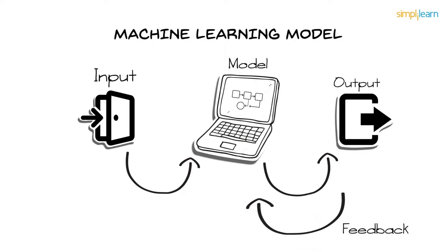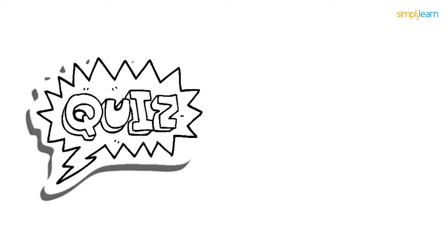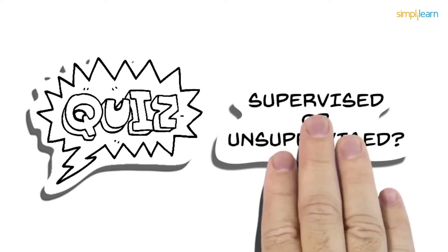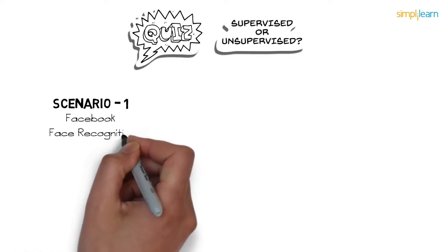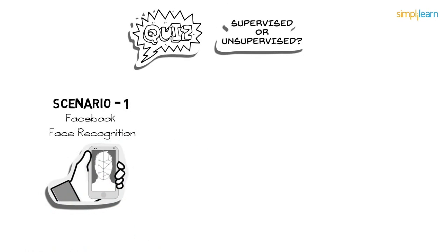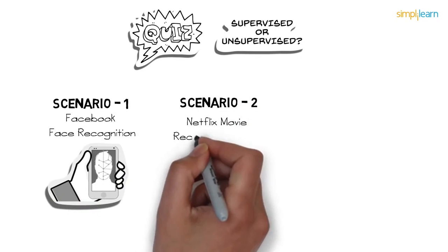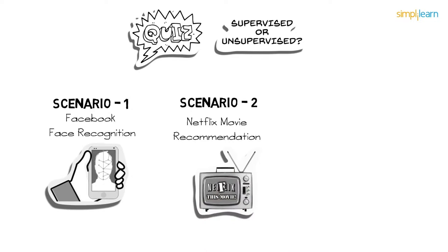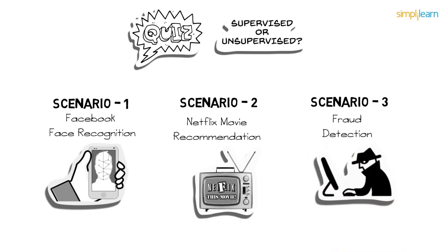Here's a quick quiz to determine whether each scenario uses supervised or unsupervised learning. Scenario one: Facebook recognizes your friend in a picture from an album of tagged photographs. Scenario two: Netflix recommends new movies based on someone's past movie choices. Scenario three: analyzing bank data for suspicious transactions and flagging fraud transactions.